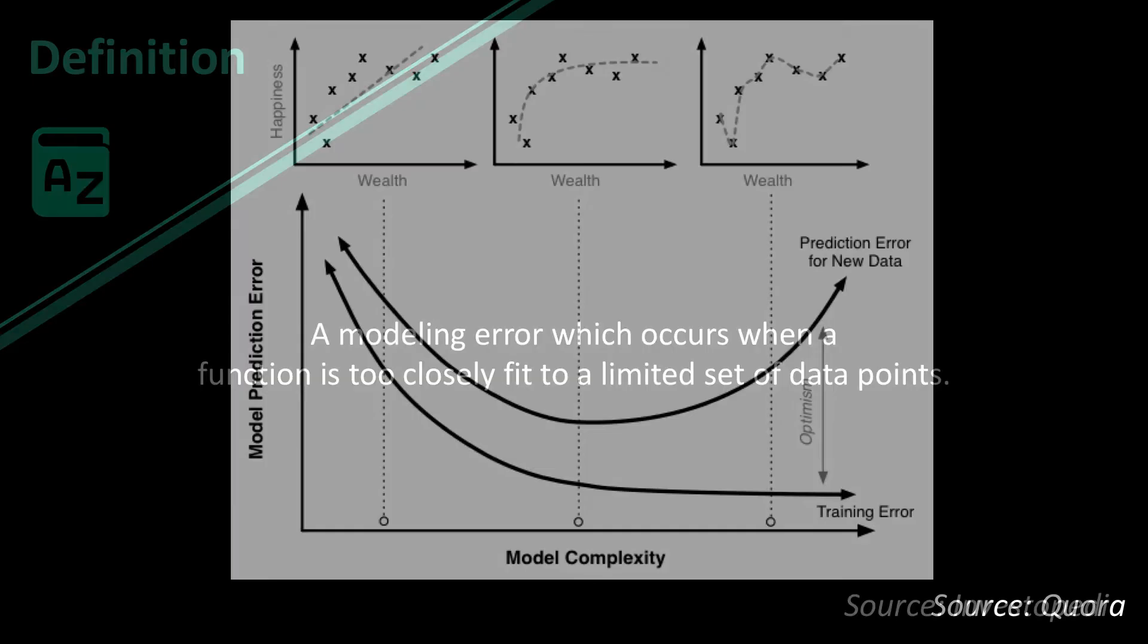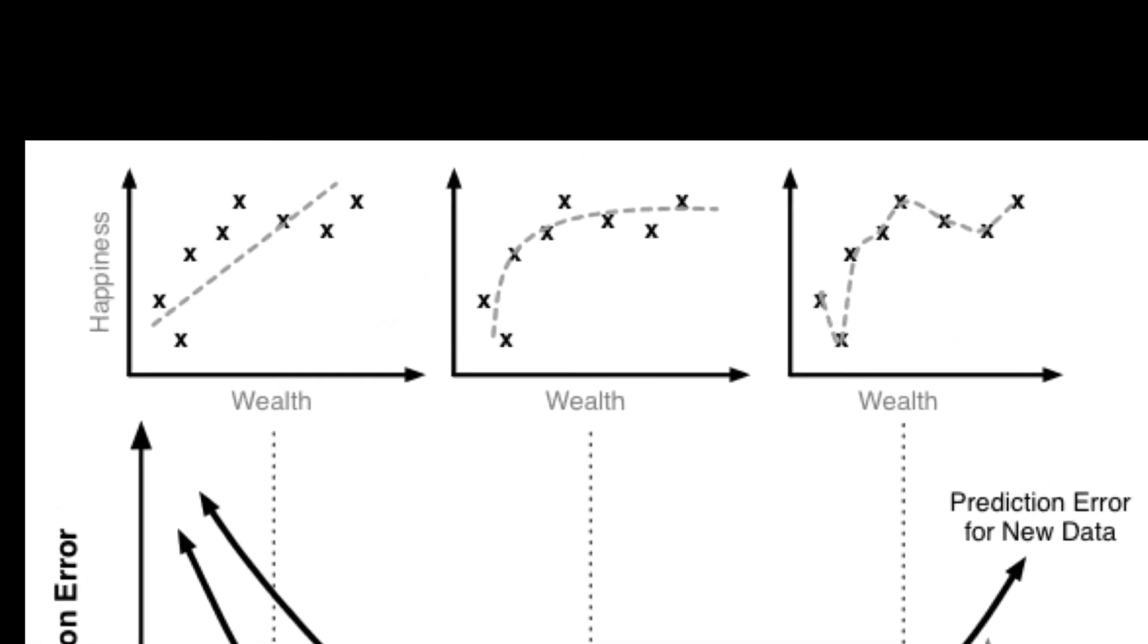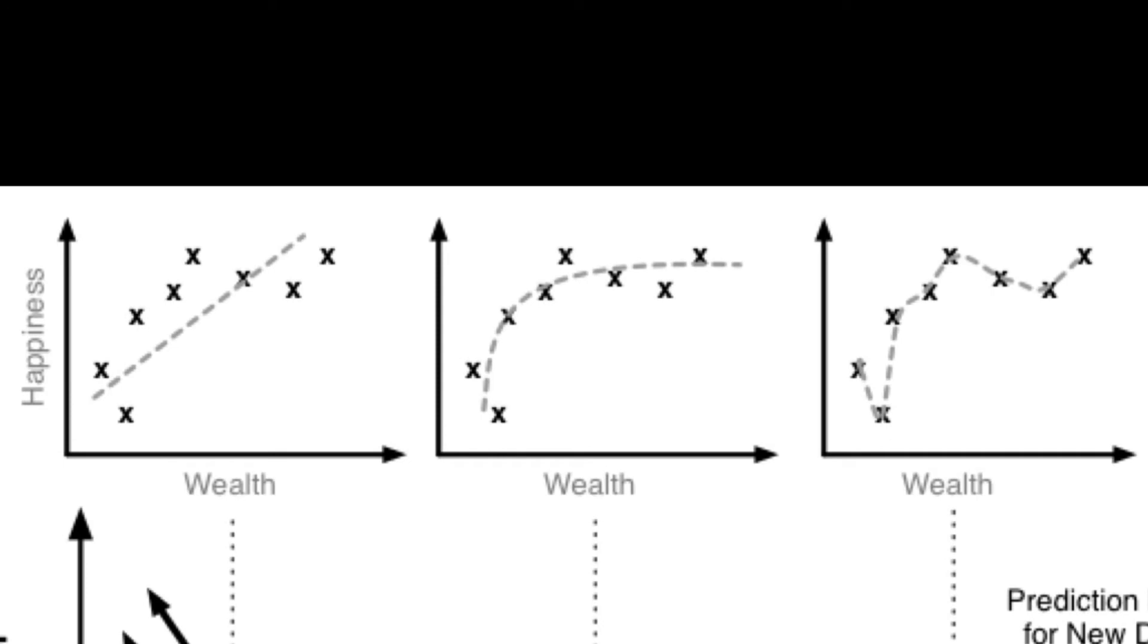It comes from a case study where researchers were trying to find the link between wealth and happiness. As you can see on the top three graphs, they have happiness on the left-hand side and wealth at the bottom. They created three different types of machine learning algorithms that tracked historical data to determine what made people happy and how wealth applied to that.